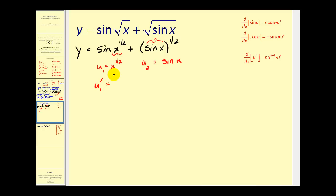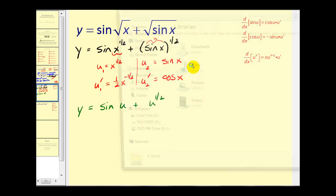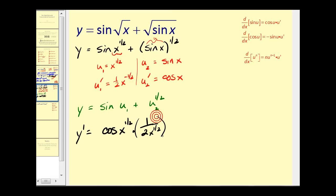U sub 1 prime equals 1/2 x to the negative 1/2, and u sub 2 prime — the derivative of sine x — is cosine x. Looking at this in terms of u, we see y equals sine u plus u to the 1/2. The derivative of sine u is cosine u times u prime, so we have cosine of x to the 1/2 times 1 over 2x to the 1/2.